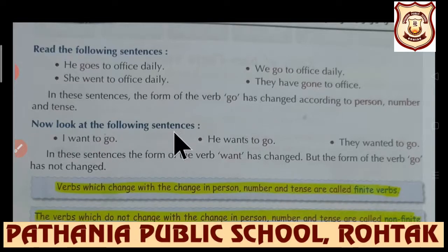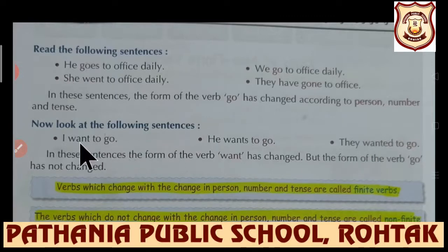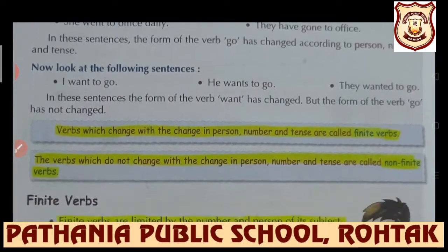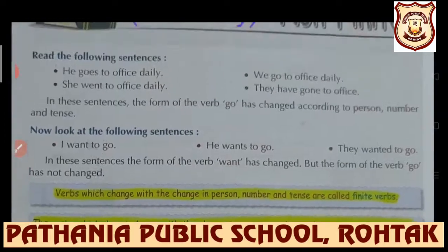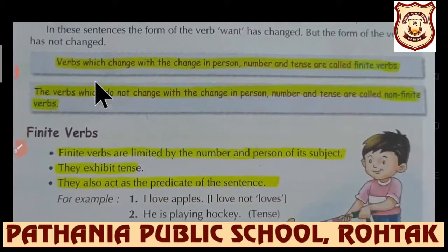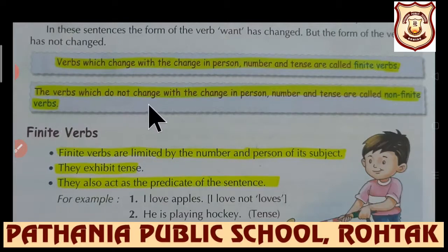Now look at the following sentences: 'I want to go', 'He wants to go', 'They want to go'. In all these three sentences, irrespective of subject - whether it is singular or plural - the verb form remains the same. 'Go' remains the same. Out of these two types of sentences, what have we learnt? Verbs which change with the change in person, number, and tense are called finite verbs. The verbs which do not change with the change in person, number, and tense are called non-finite verbs.